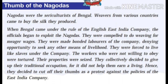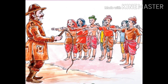Workers who were not willing to obey the English East India Company were tortured and had to suffer a lot. The British seized their properties from them legally. Thus, Nagodas took a collective decision that they would give up weaving — their traditional occupation — because it did not help them earn a living or meet their daily needs. Hence, Nagodas decided to cut off their thumbs as a protest against the policies of the English East India Company.